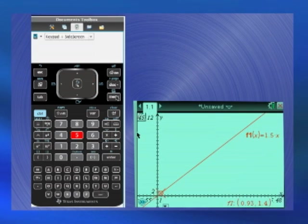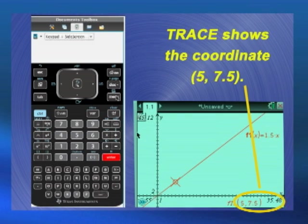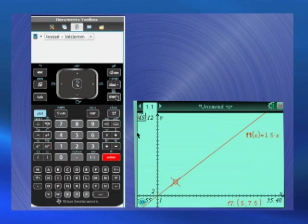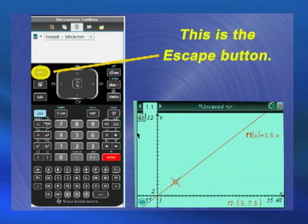To skip ahead to x equals 5, press 5, then enter, and you obtain y equals 7.5. Press escape to exit the trace mode.